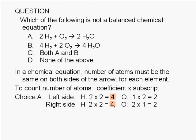We can see that the number of hydrogen atoms is the same on both sides of the arrow. Therefore, what we have in choice A is a balanced equation.